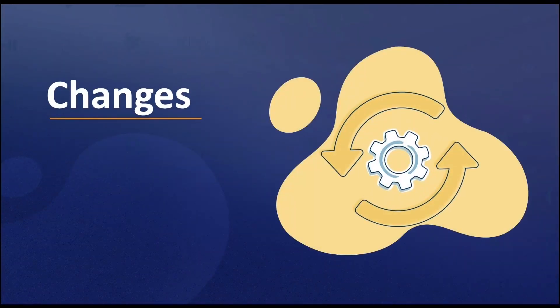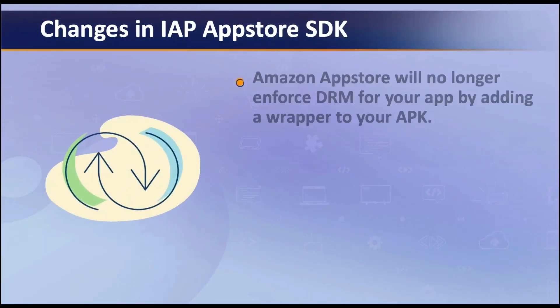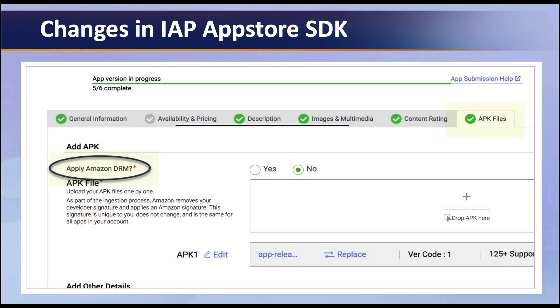The new App Store SDK will replace the previous SDK, IAP v2. It differs from the old SDK in a few ways. Firstly, Amazon will no longer enforce DRM for your app by adding a wrapper to your APK. Previously, when you uploaded Android APKs into the Amazon App Store, you had the option to select yes or no for 'Apply Amazon DRM' on the APK files tab.